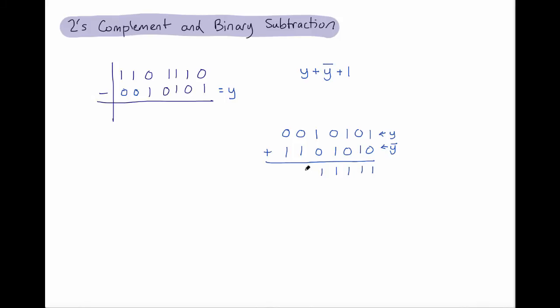Adding them together, I get a number that's all ones. When I add one more to this sum, every digit carries over. And I get one more, we call this an overflow bit. If we're working in a system where the only digits we're interested in are the digits to the right of this line, so if we discard this overflow bit, then what we've noticed is the numbers y plus y bar plus 1 add up to 0.